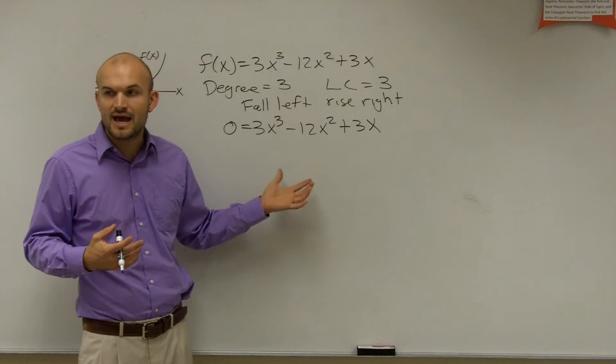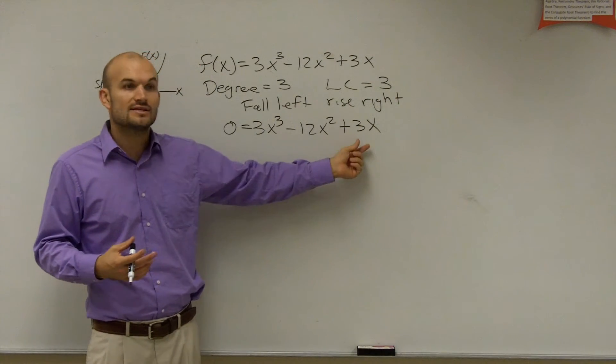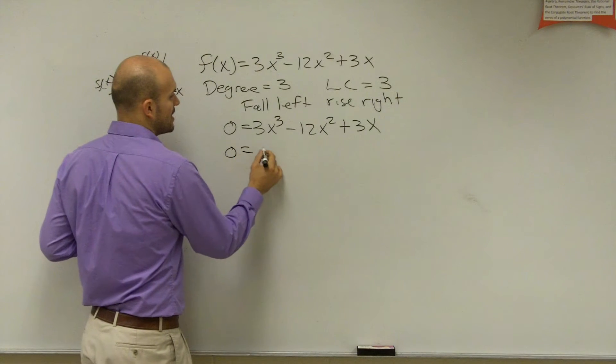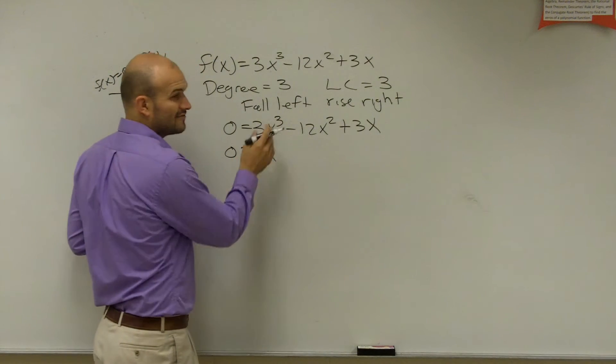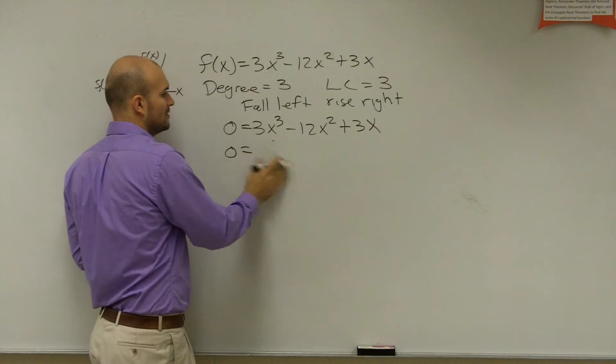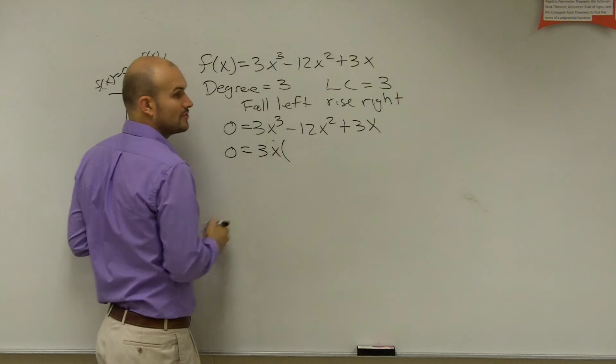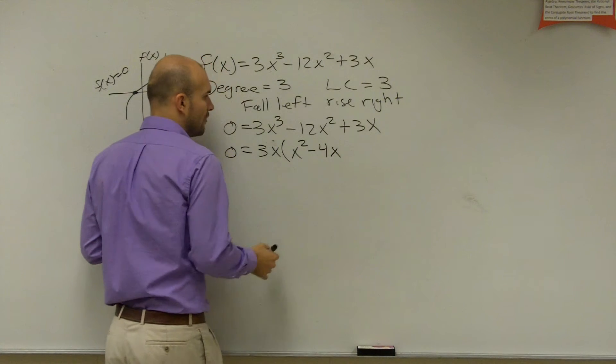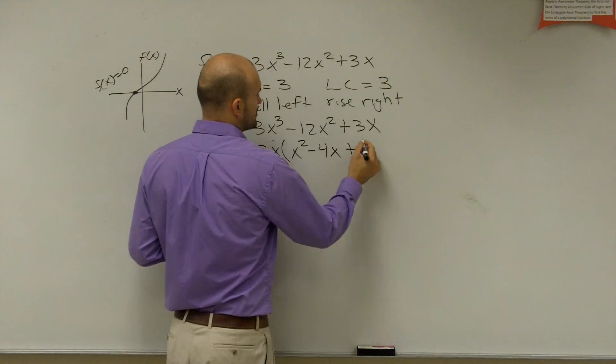What common terms do these have? And you guys hopefully can see that these all have a common term, a term of x. So, I'm going to factor out an x. Actually, I can factor out a 3x, right? Yeah. I'm getting a little ahead of myself. So, let's factor out a 3x. So, I'm left with x squared minus 4x plus 1.